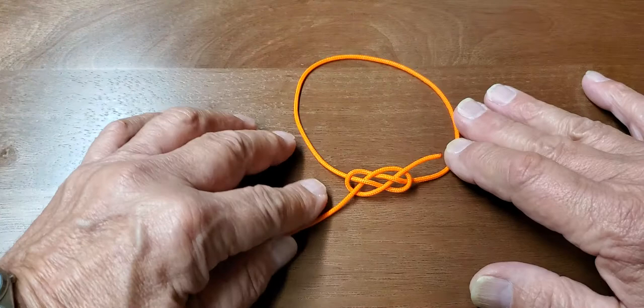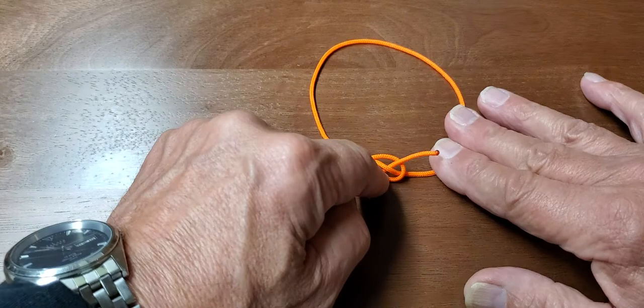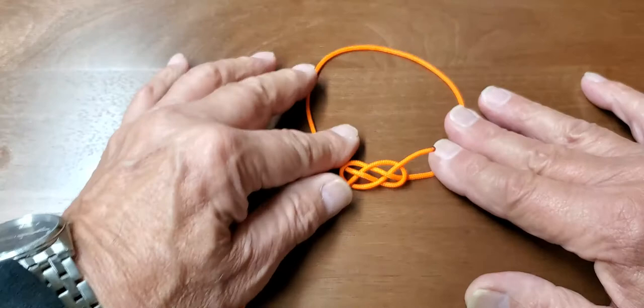So all we did was go under the long end and into the first loop and out the second loop. So it was under and up and out.